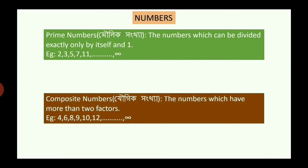Next is composite numbers — numbers which have more than two factors. For example, the number 4: if you have 6, you can find factors 1, 2, 3, and 4. Examples of composite numbers include 4, 6, 8, 9, 10, and 12.